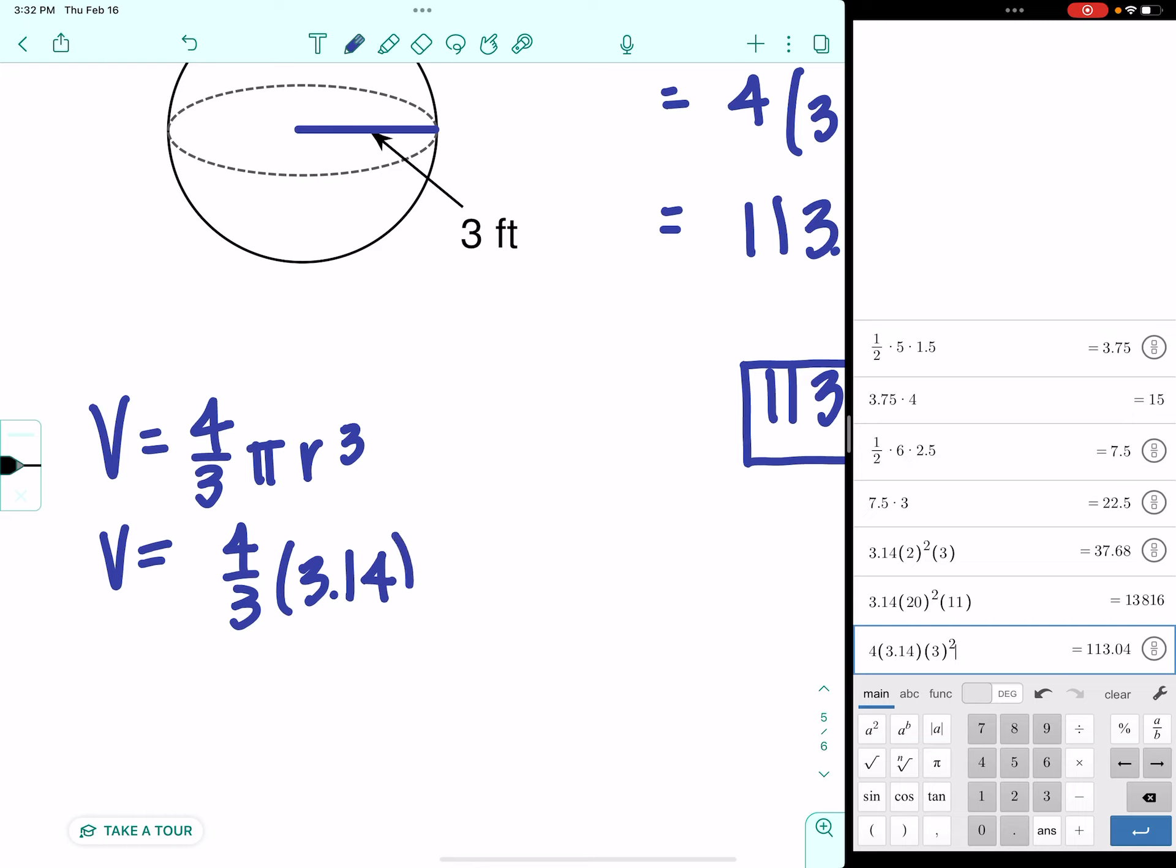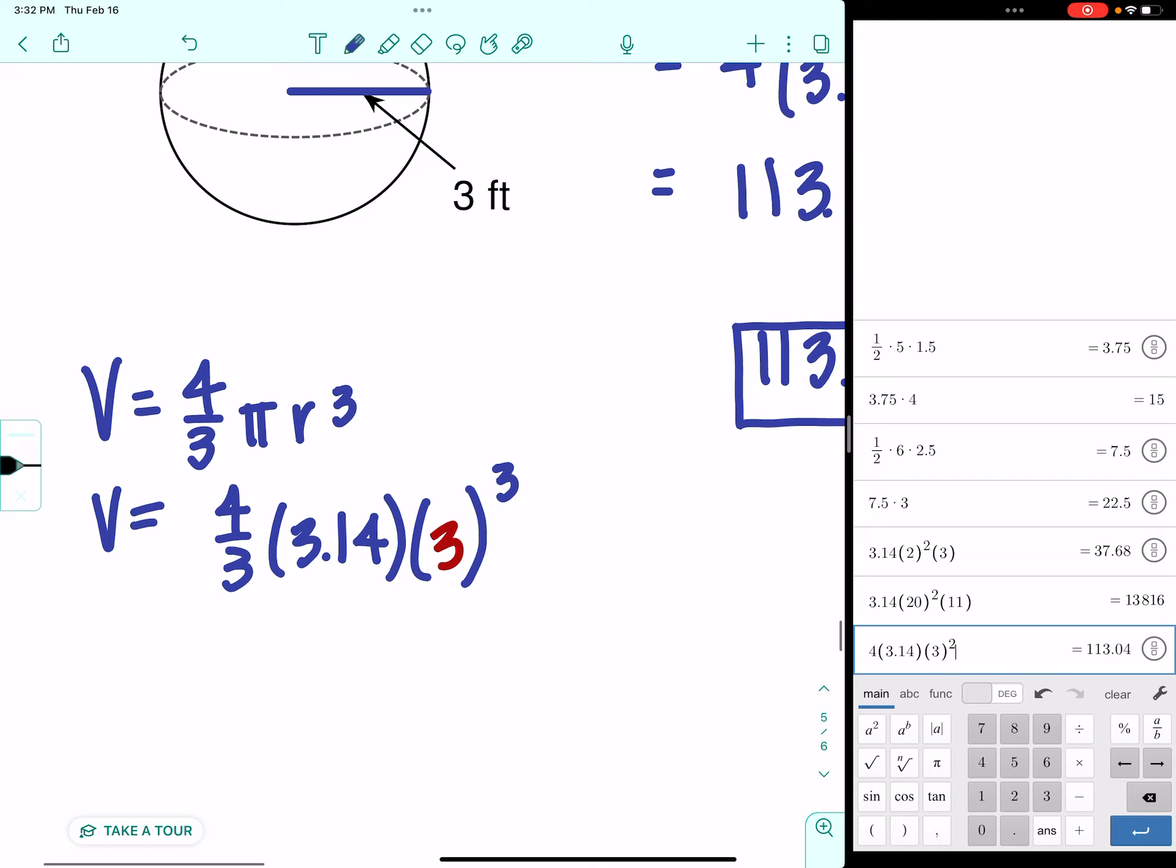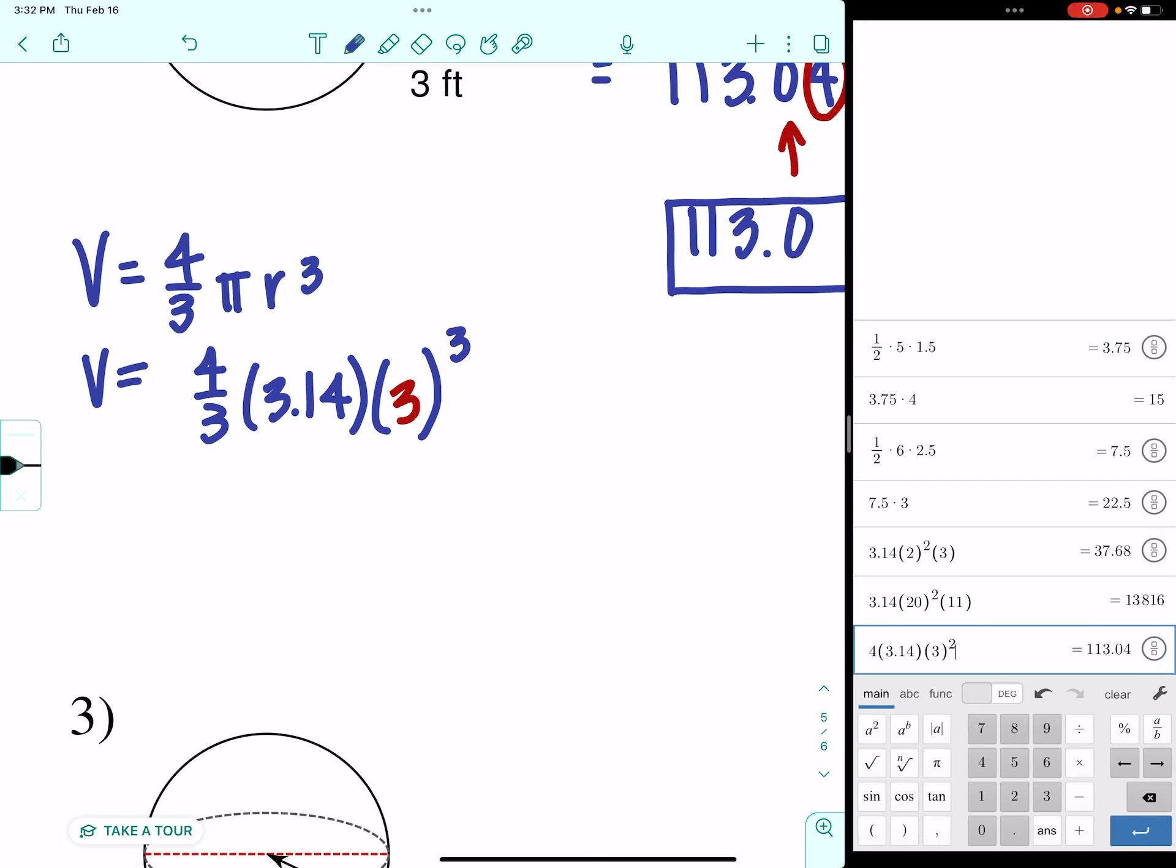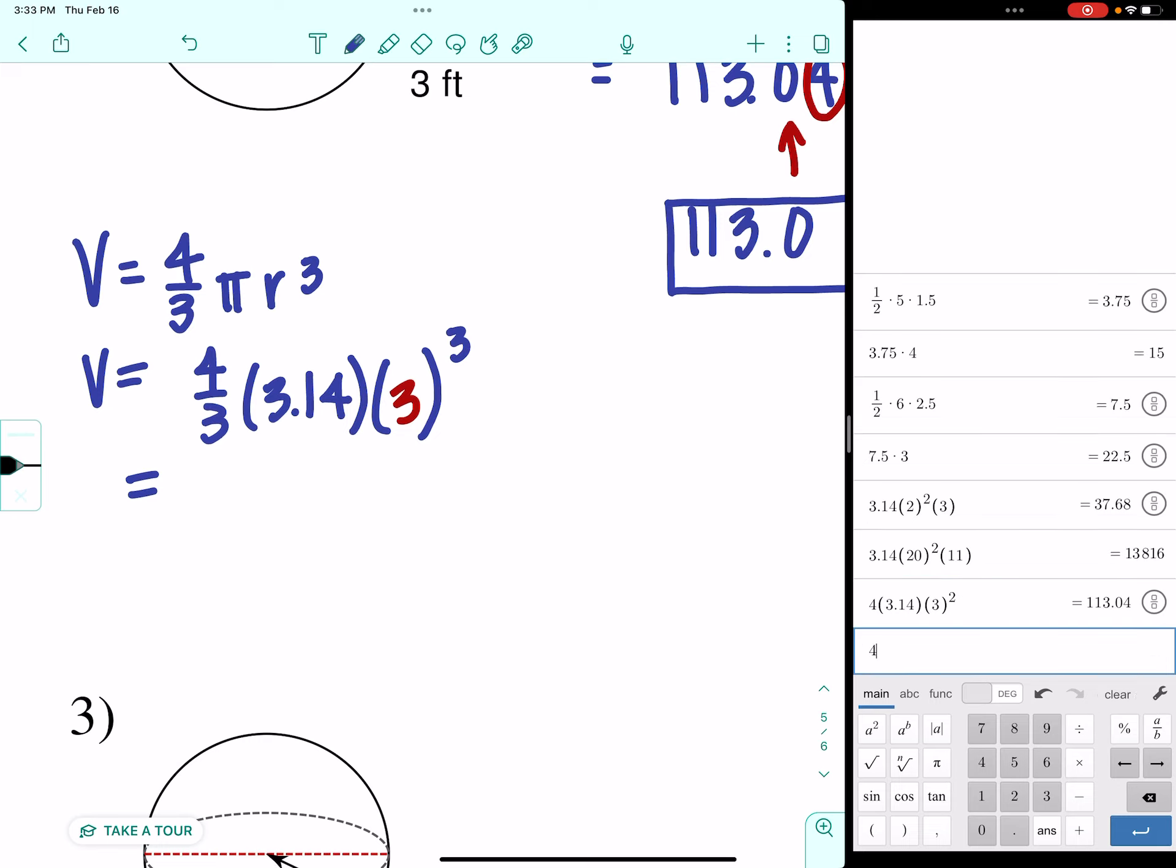I'm going to use 3.14 again for pi. My radius is 3. And it's raised to the third power. So, this is definitely, at least for me, a Desmos problem.